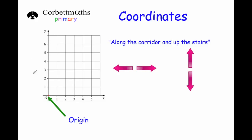So first of all, this is a set of axes. The horizontal line is called the x-axis and the vertical line is called the y-axis. The x-axis starts at 0, goes 1, 2, 3, 4, 5 and so on, and sometimes goes to the left: minus 1, minus 2, minus 3. The y-axis starts at 0, goes up vertically 1, 2, 3 and so on, and sometimes goes down minus 1, minus 2, minus 3 — we'll look at that later.